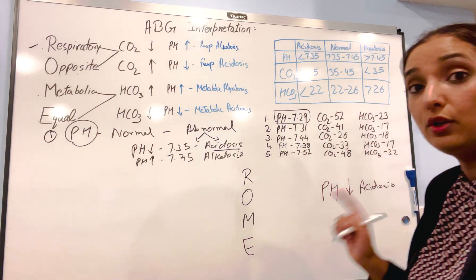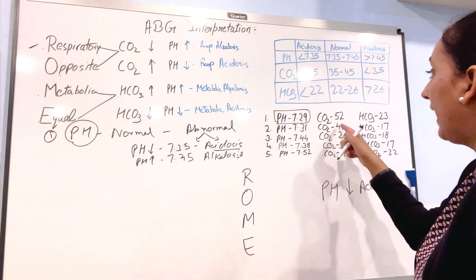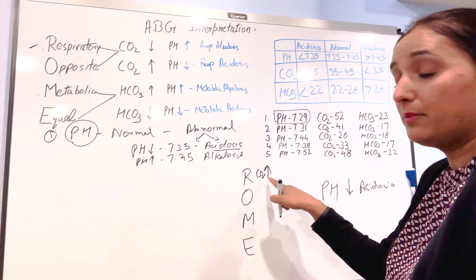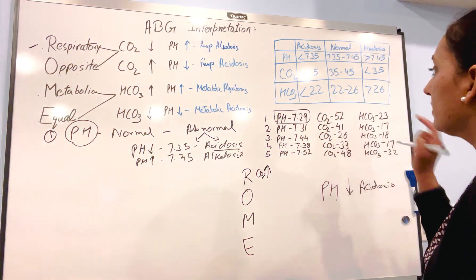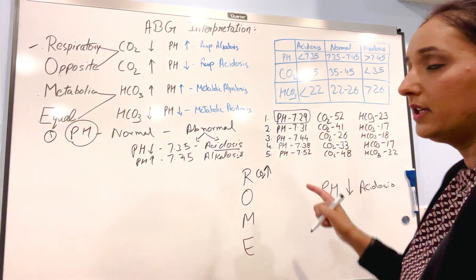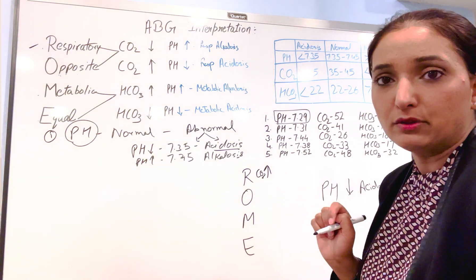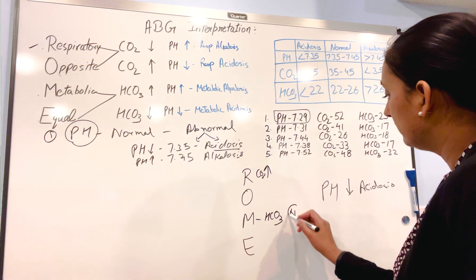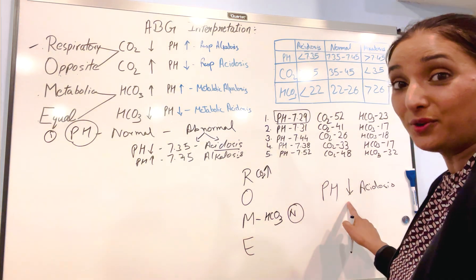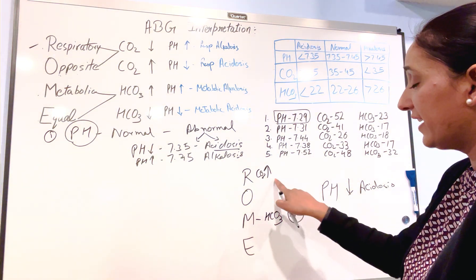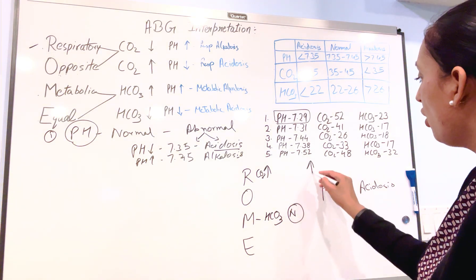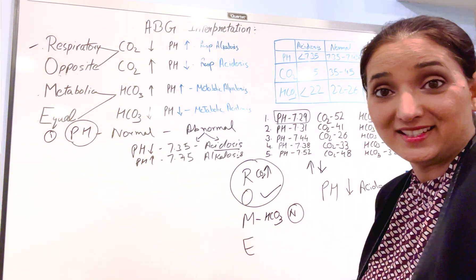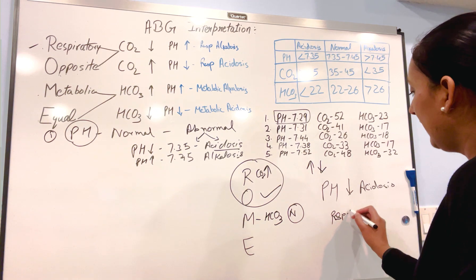Next, look at carbon dioxide. Normal value is 35 to 45, and this is 52 — so carbon dioxide is increasing. Then look at bicarb: bicarb is 23, which is in normal range of 22 to 26, so bicarb is normal. Using the ROME method: carbon dioxide is going high, pH is going down — they are going in opposite directions. Opposite direction means this is respiratory acidosis.